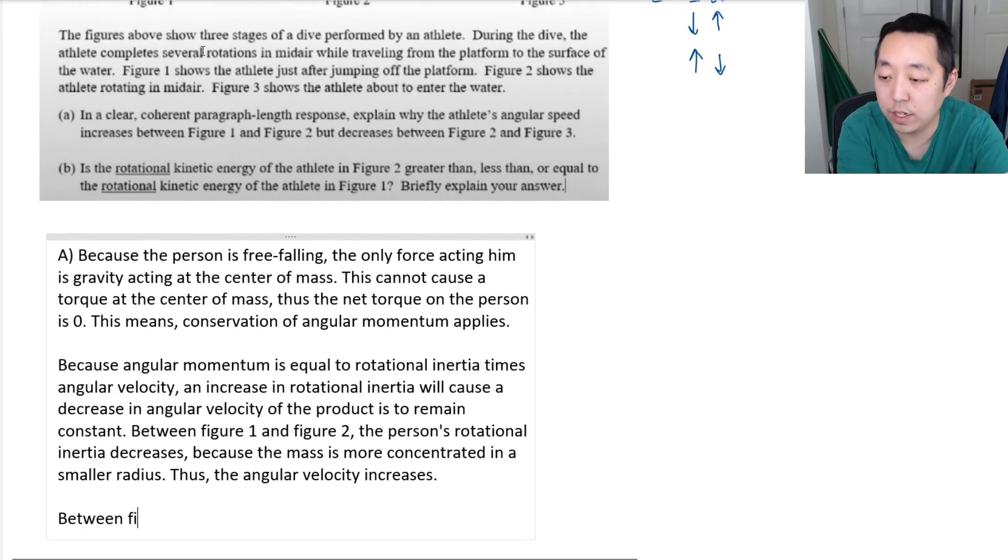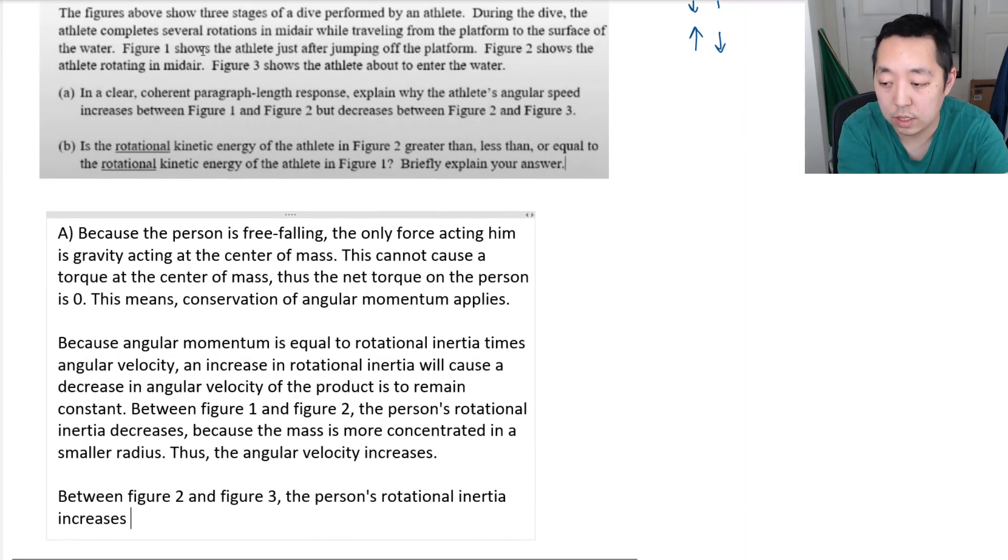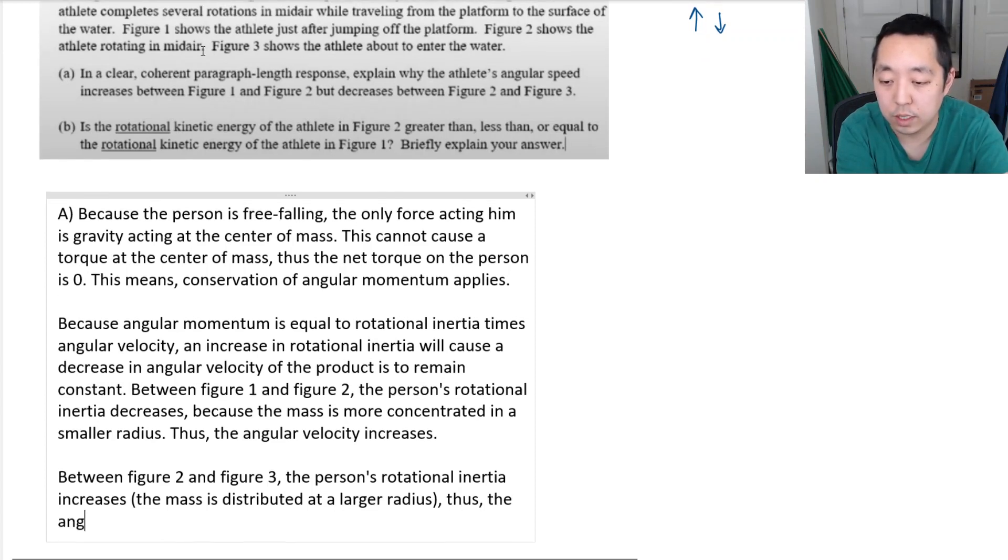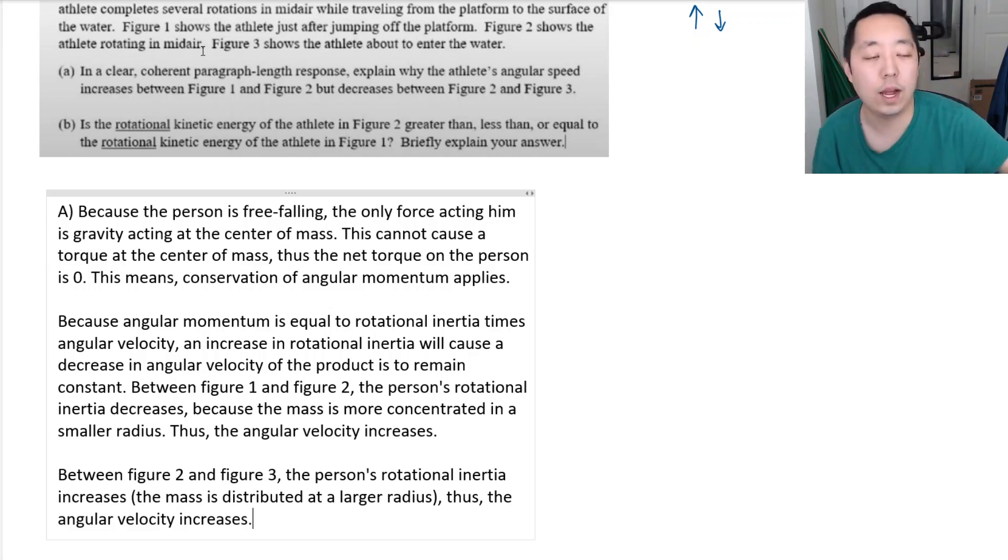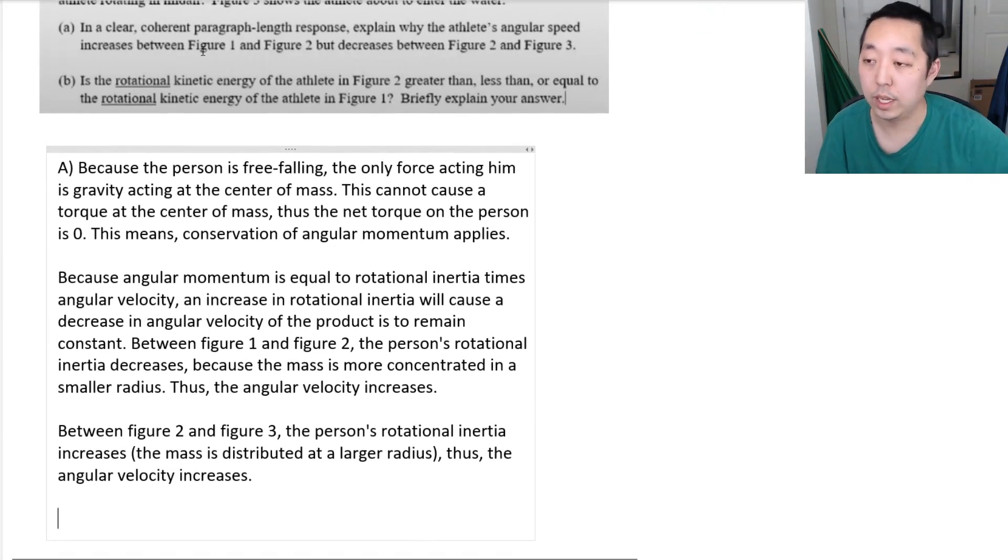Between figure 2 and figure 3, the person's rotational inertia increases. The mass is distributed at a larger radius. Thus, the angular velocity increases. Okay, and that's how I would have typed up part A there.